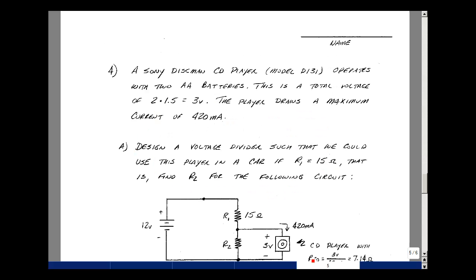For problem number four, I took some data on a Sony Discman CD player, which operated with two AA batteries, had a voltage of about three volts, and I found that the current that was drawn by the player when the motor was spinning was about 420 milliamps. Could you design a voltage divider such that I could use this CD player in a car if I picked the resistor R1 to be 15 ohms?